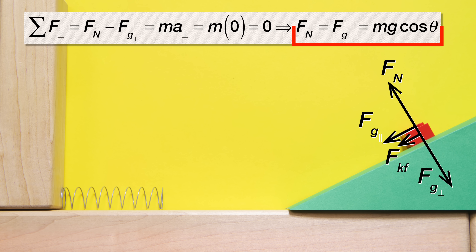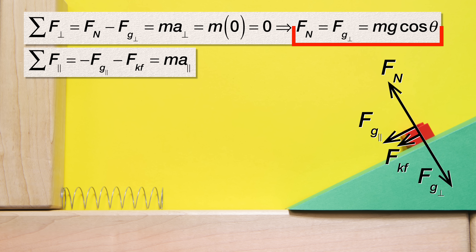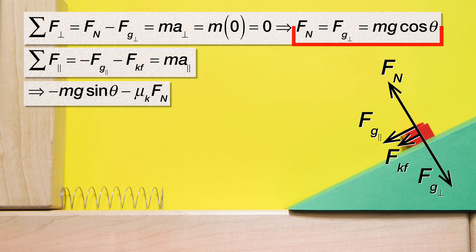Now we can sum the forces in the parallel direction. The net force in the parallel direction equals the negative of the force of gravity parallel minus the force of kinetic friction. Both of those forces are negative because they are to the left. The net force in the parallel direction also equals mass times acceleration in the parallel direction. We have equations for both forces, so we can substitute for the force of gravity parallel: mass times the acceleration due to gravity times the sine of the incline angle.